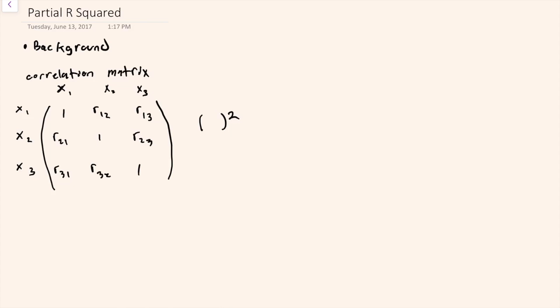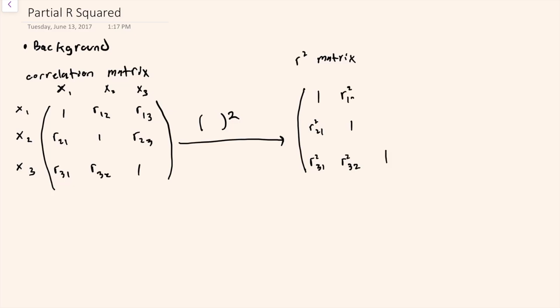And if we take these values and square them, then we end up with what I'll call an R-squared matrix. Again, along the diagonals are all ones, and then the off-diagonals would be the R-squares between the variables — so this is the R-square between x2 and x1, between x3 and x1, between x3 and x2, between x1 and x2, between x1 and x3, and between x2 and x3. The values in this table represent the pairwise proportionate variation accounted for in one variable by the other.